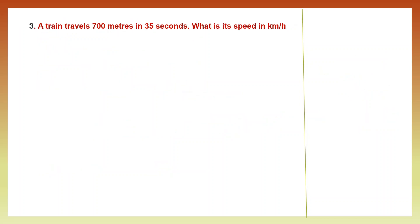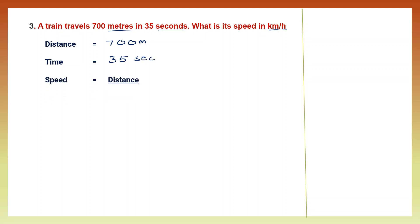Question 3. A train travels 700 meters in 35 seconds — so this is meters and seconds. We have been asked to find the speed in kilometers per hour. Distance given is 700 meters, time given is 35 seconds. Speed is distance by time, so speed equals 700 meters divided by 35 seconds. Our answer should be in kilometers per hour, so we have to convert meters to kilometers and seconds to hours.